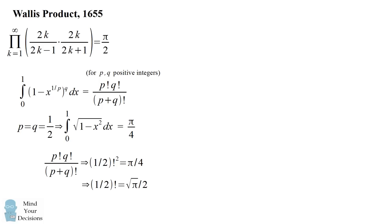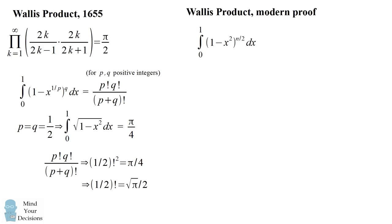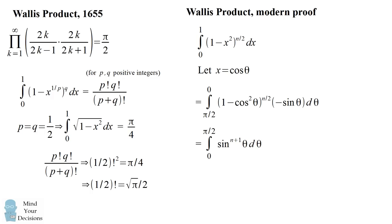I provided a separate video which gives some intuition about what factorials are for numbers that are not whole numbers — you can go ahead and watch that. For now I'm going to continue on with the Wallis product. The modern proof is related to the integrals that Wallis was studying. We'll simplify this with the substitution x equals cosine of theta, change the limits of integration, and substitute in the correct variables. We now remember the identity that 1 minus cosine squared of theta equals sine squared of theta, and we essentially end up studying the integral of sine to the power of n.